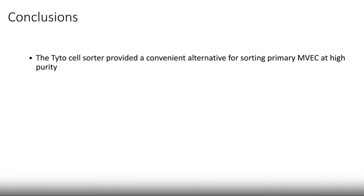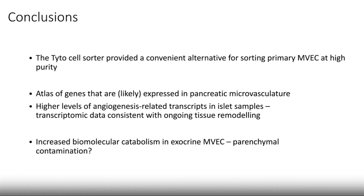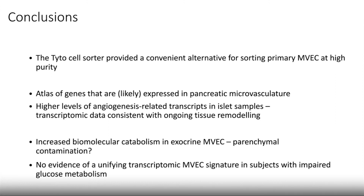For some conclusions: the Tyto cell sorter provided a very convenient alternative for sorting primary microvascular endothelial cells at high purity. This allowed us to create a sort of atlas of genes likely expressed in the pancreatic microvasculature. Among these genes, we found higher levels of angiogenesis-related transcripts in our islet microvascular endothelial cell samples, with transcriptomic data consistent with ongoing tissue remodeling previously suggested in the literature. In our exocrine microvascular samples, we found an upregulation in biomolecular catabolism, possibly due to some contamination from exocrine parenchymal cells.